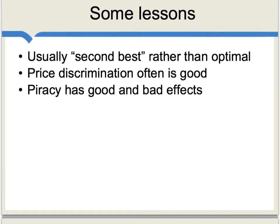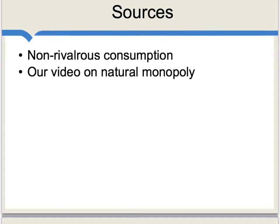What are some lessons for real-world settings where non-rivalrous consumption operates? First, very often we get an imperfect or second-best result rather than something optimal — it is ideally possible to include all consumers, but practically speaking that's difficult to pull off. Second, price discrimination often is good: by offering price discounts to individuals who value the good or service less, we're including them in output without harming anyone else. Finally, piracy has both good and bad effects. The bad effect is well known: if a customer doesn't pay, that diminishes the incentive for the supplier to produce. But the good effect is clear in this model — if the social marginal cost of having additional viewers or listeners really is zero, piracy is helping bring about some additional consumption of the TV program or the music. Along with fixed costs, non-rivalrous consumption really is one of the key theoretical ideas of media economics.